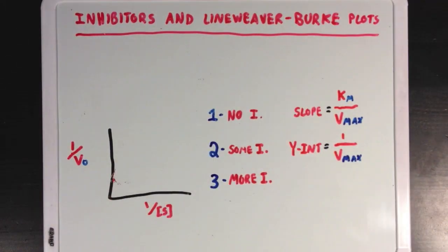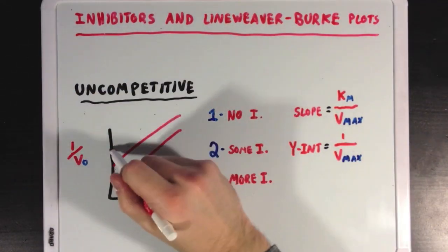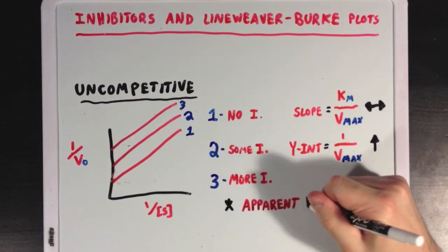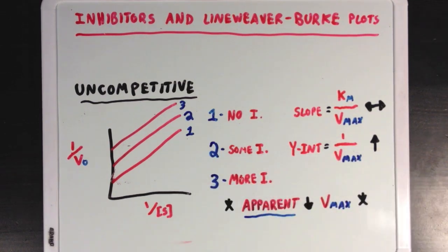Next, we'll talk about uncompetitive inhibition. In this case, you'll notice that all three lines have the same slope, but different increasing y-intercepts. What this means is that as you increase the concentration of inhibitor, you'll see a decrease in the apparent Vmax, since the y-intercept is defined as 1 over Vmax.